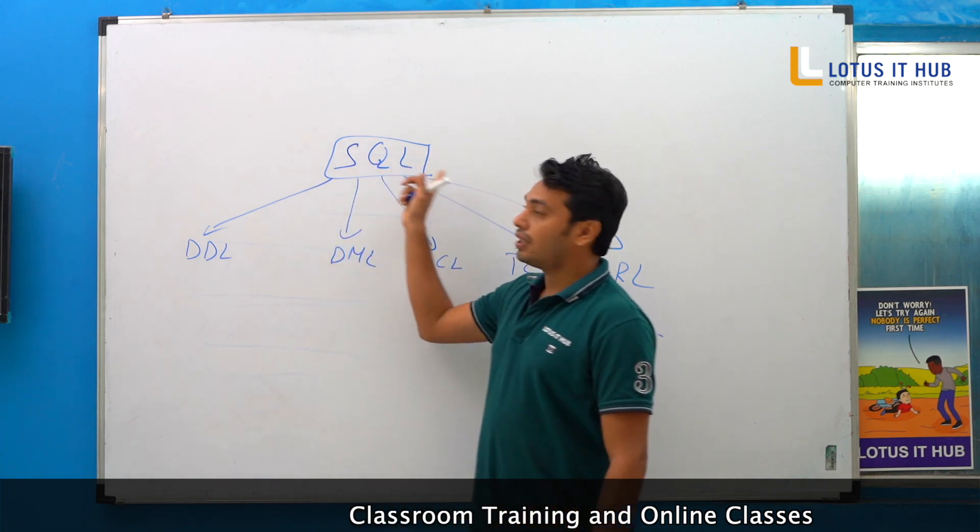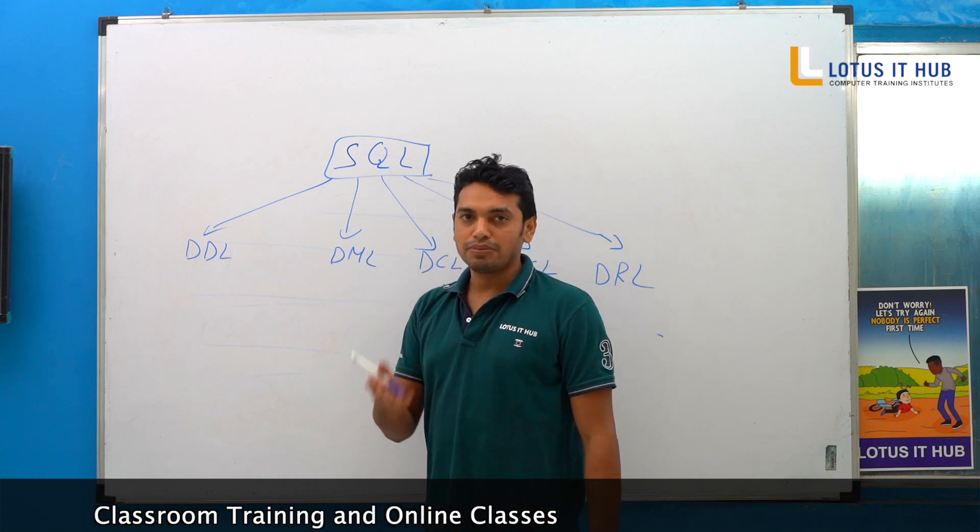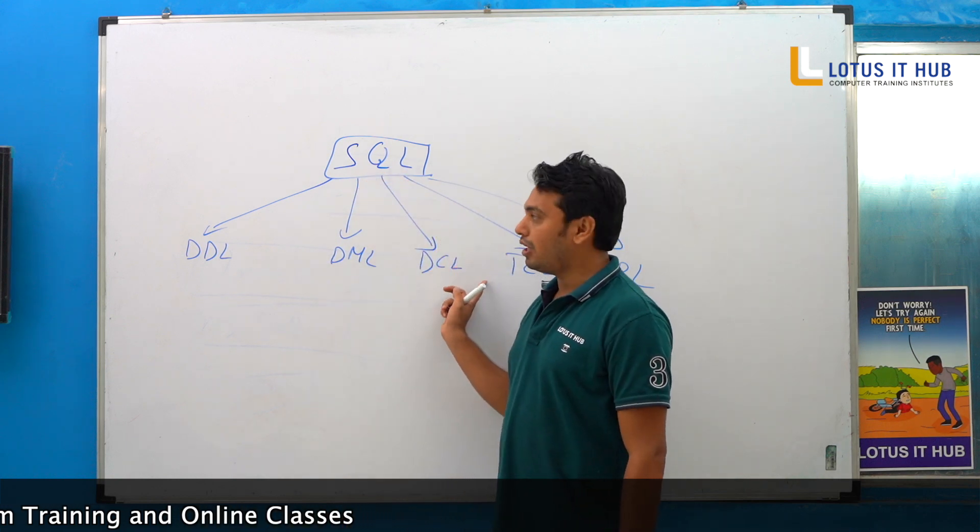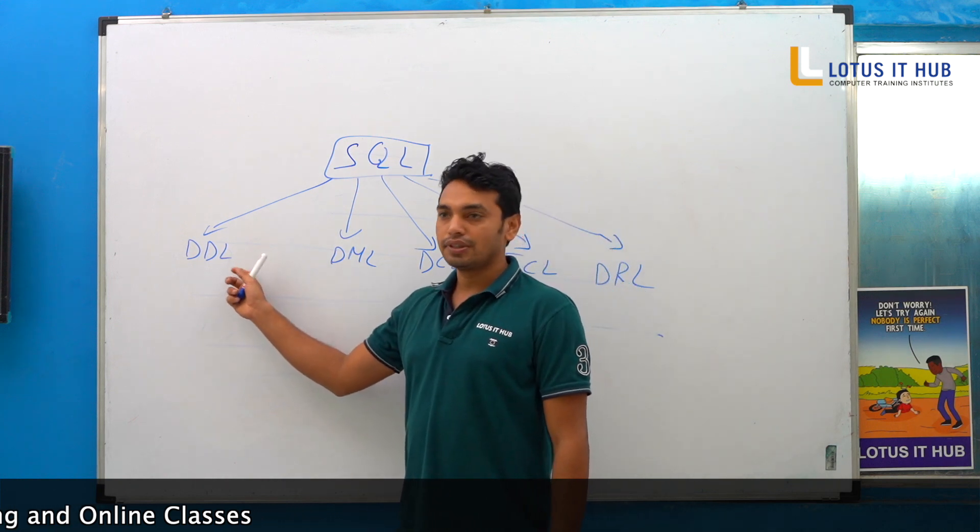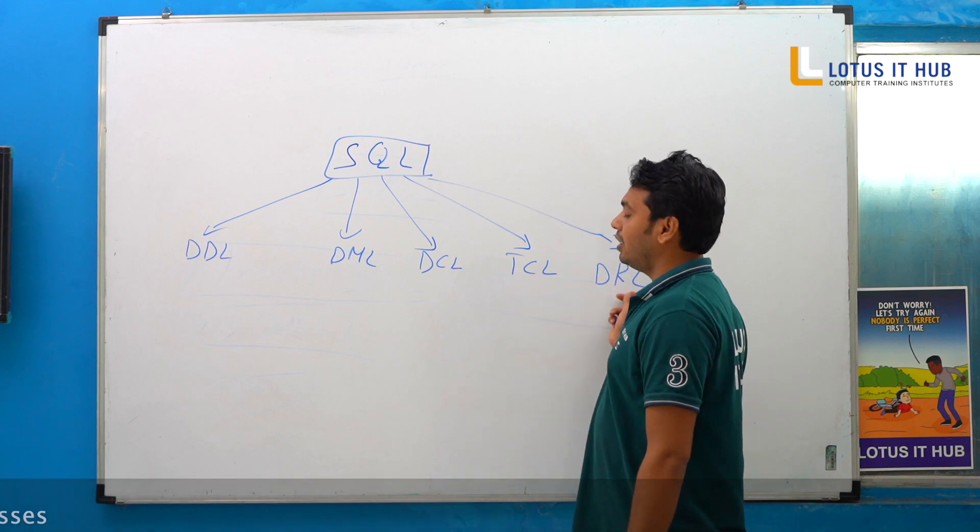SQL is structured language. C is a procedure oriented language, C++ is object oriented language. Mainly what we discuss in SQL is having five components: DDL, DML, DCL, TCL, and DRL.